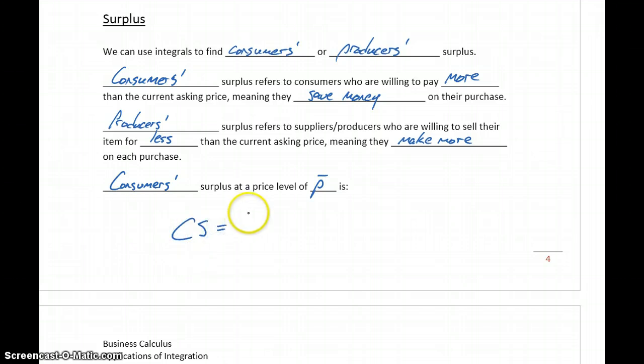we can calculate consumer surplus as the integral from 0 to x bar, where x bar is some specific demand level, which we'll have to find. So if we integrate the difference between that price demand equation and our given price over the interval from 0 to some specific demand level, we'll be able to calculate that consumer surplus.